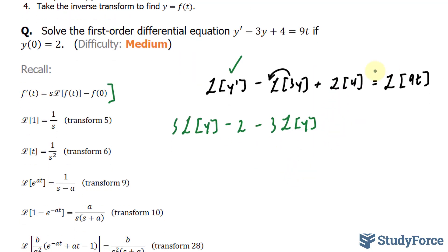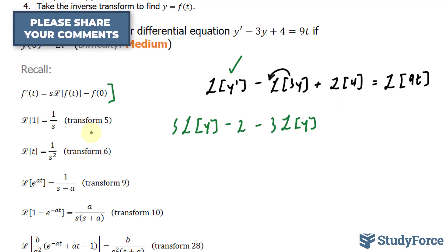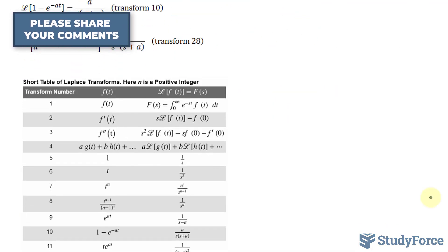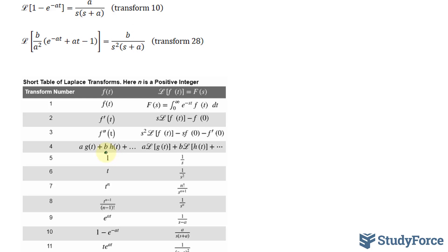The Laplace transform of 4, for that I'll use transform number 5. Transform number 5 tells us that if we have a constant, which in our case is 4 (this one is 1), we'll write down 1/s. And then you take your 1, you multiply it by 1/s.